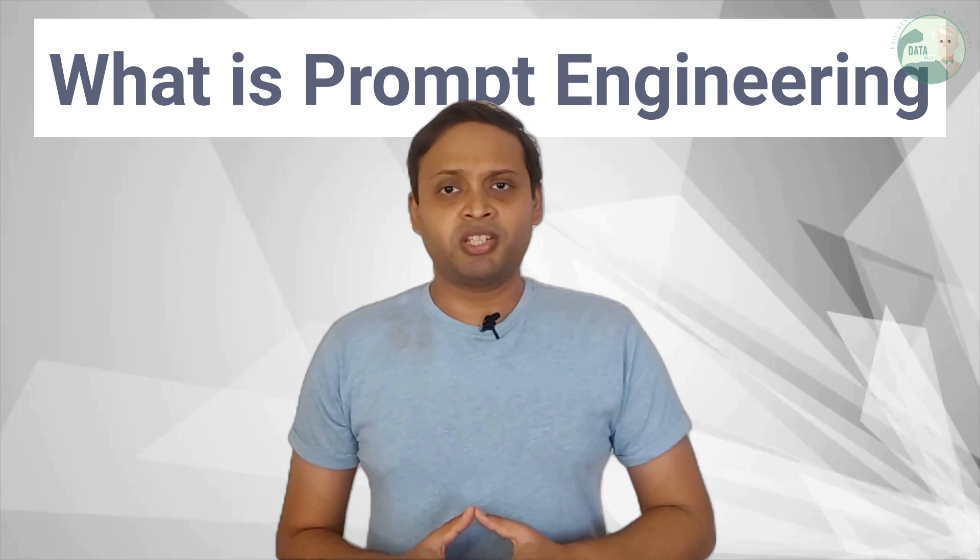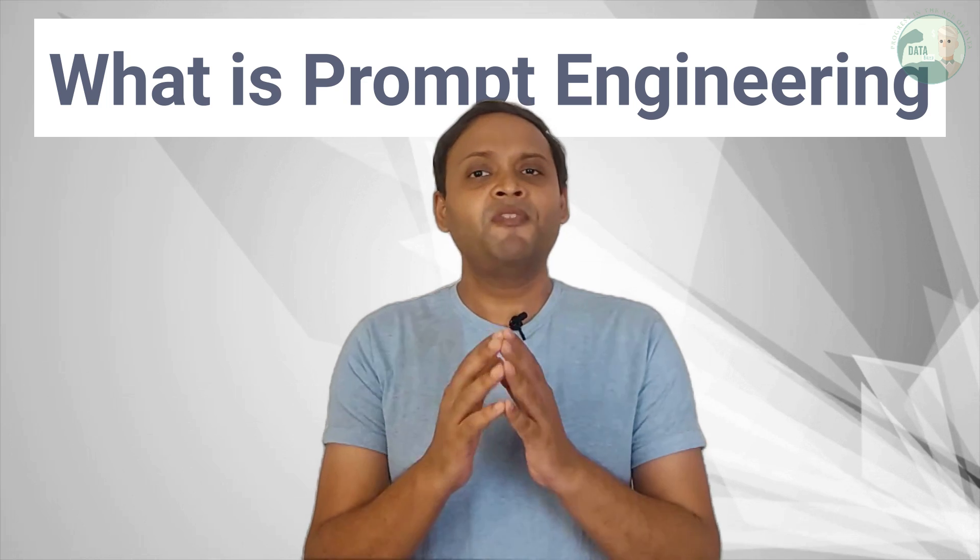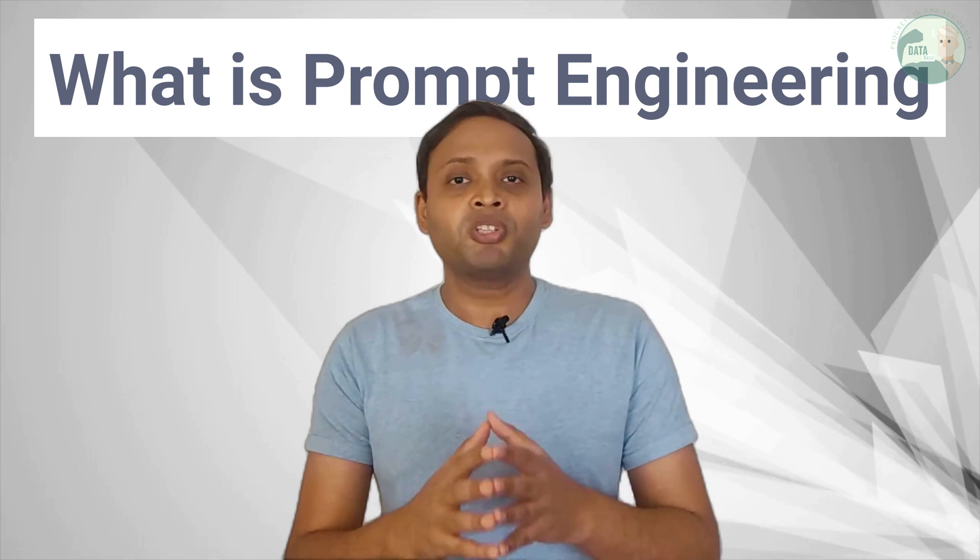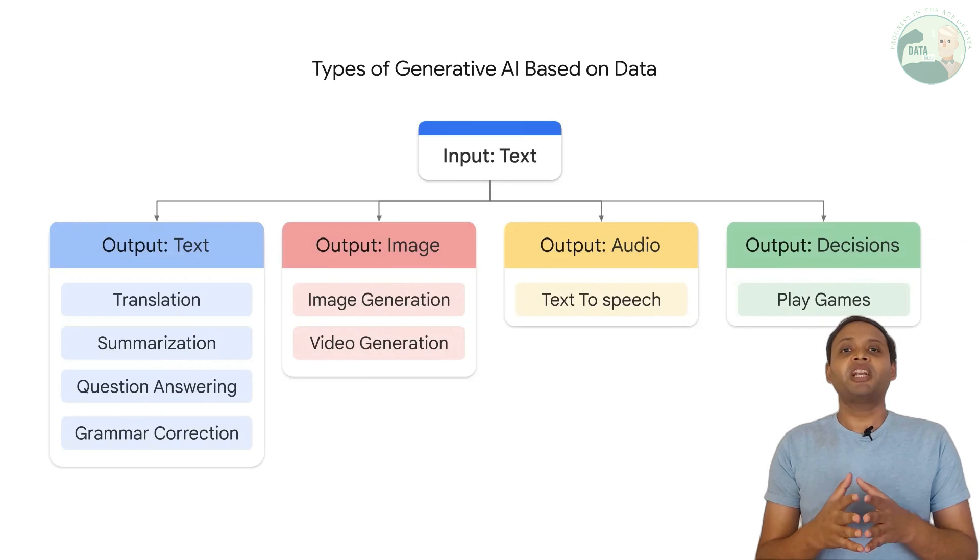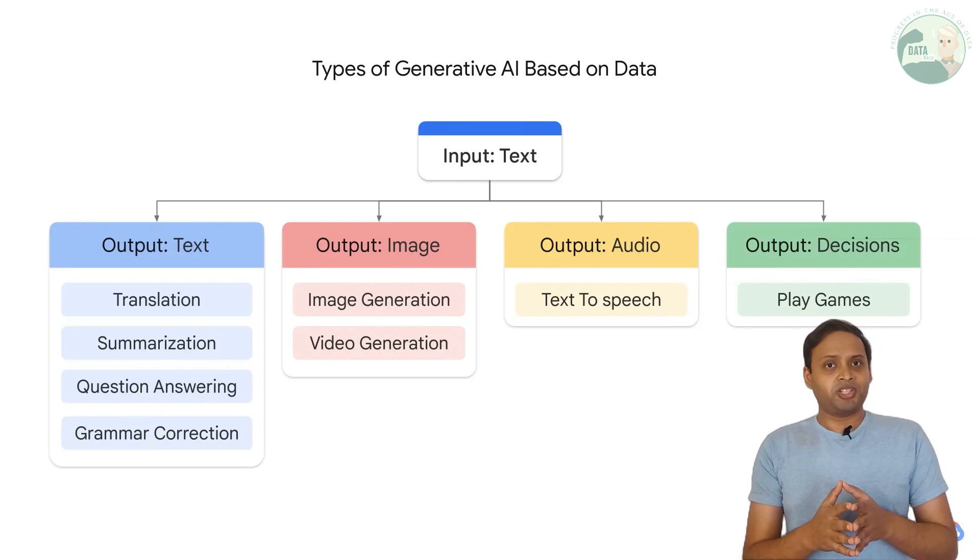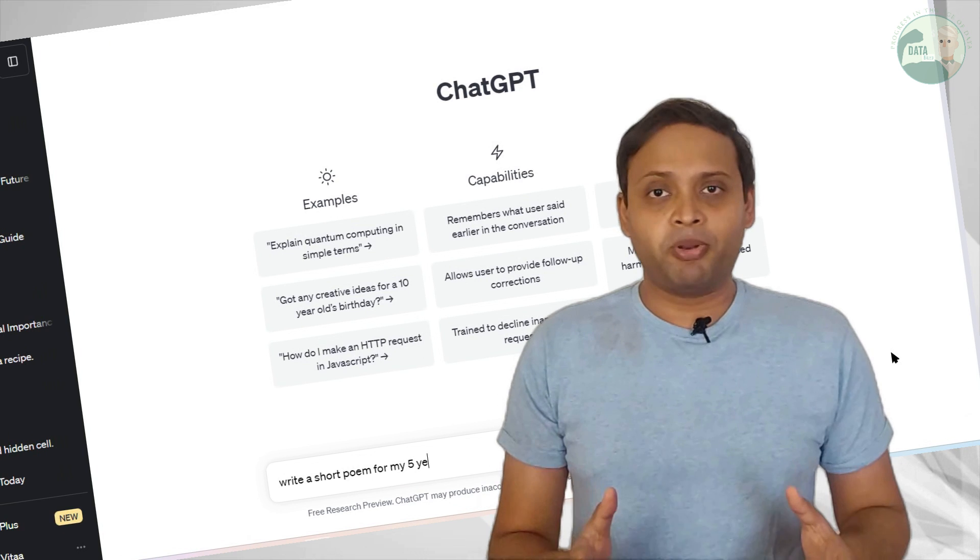In layman's term, it is all about how can you ask Generative AI model a question efficiently so that you get the most desired and most accurate answer. There are many types of Generative AI models. It can be text, like your ChatGPT, where you can ask a question. The model understands your question, its topics, and its context, and answers accordingly. And those answers are not prefabricated.